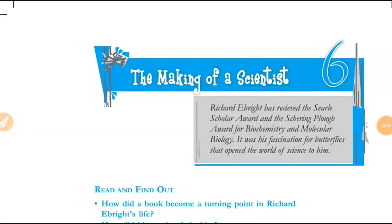Hello everyone. In this video we will see the summary of Chapter 6, 'The Making of a Scientist', written by Robert W. Peterson. We will see the summary in English, and I will upload a Hindi version soon in which I will explain a detailed version of the chapter.